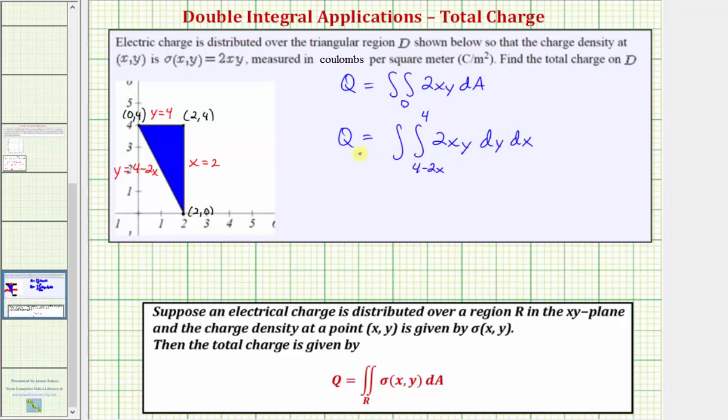Now that we have the region bounded above and below, we integrate with respect to x. Looking back at our region, notice how we start at x equals zero and stop at x equals two. So limits of integration with respect to x are from zero to two. Now let's go and evaluate this on the next slide.